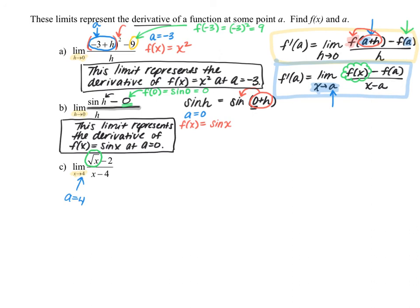Let's test that: if a equals 4 and our function is square root of x, the second value — the 2 — should be f of a. So f of 4 with function square root of x gives us the square root of 4, which is indeed 2, so that checks out. Therefore, this limit represents the derivative of the function square root of x at a equals 4.